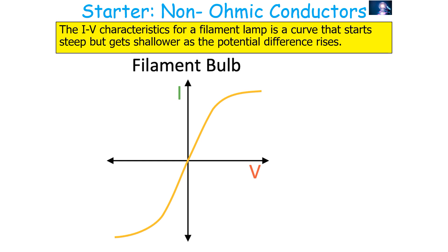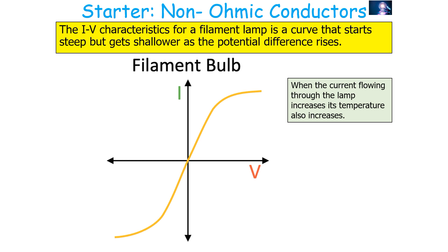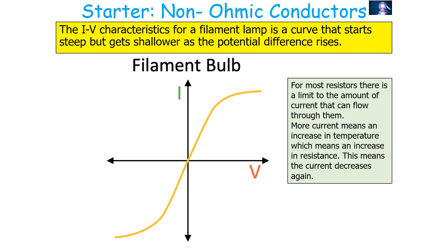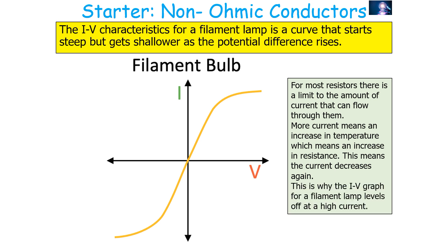The next IV graph is for a filament lamp. The IV characteristics for a filament lamp is a curve that starts steep but gets shallower as the potential difference rises. When current through the lamp increases, the temperature of the filament also increases, which increases the resistance. This is because electrical energy is transferred into vibrational energy of the lattice by collisions, making it more difficult for charge-carrying electrons to flow. More current means higher temperature, higher resistance, causing current to decrease — which is why the IV graph for a filament lamp levels off at high current.